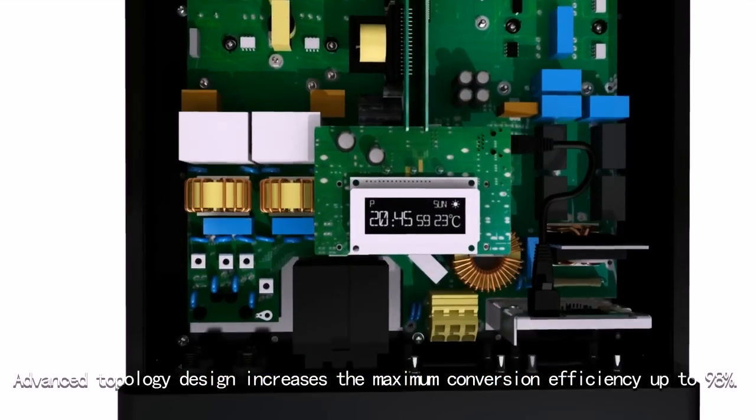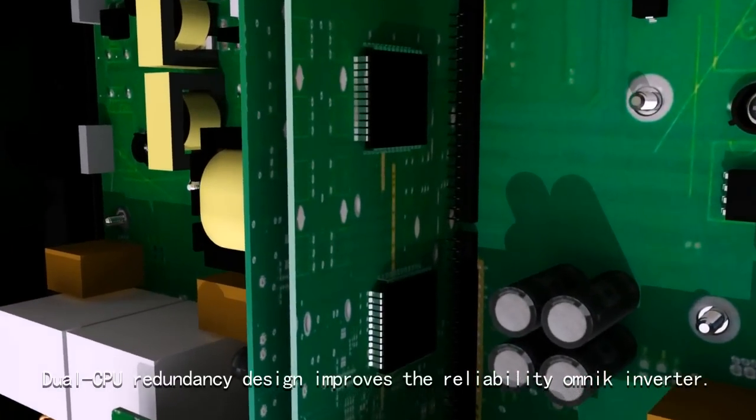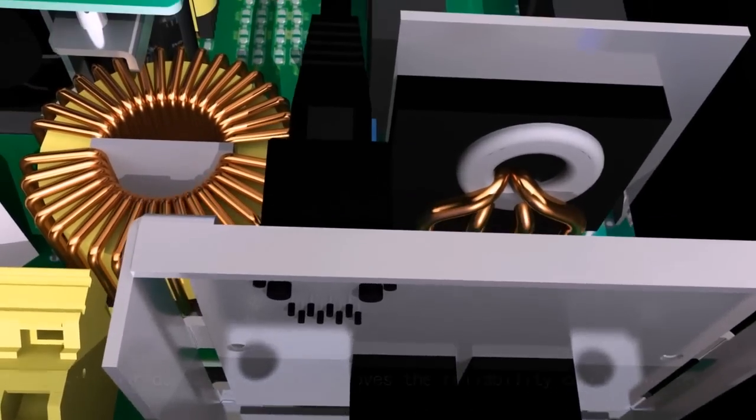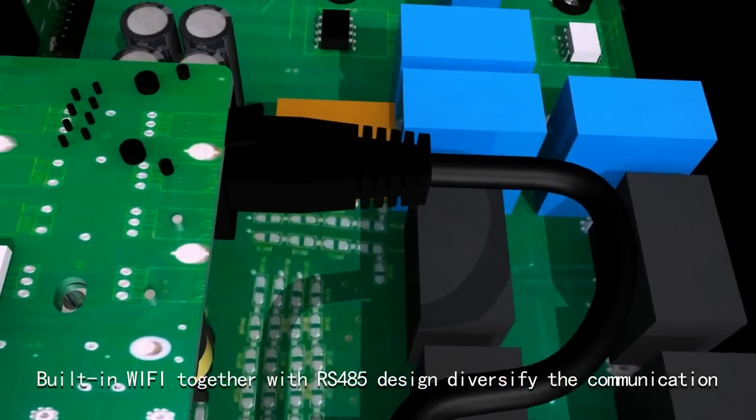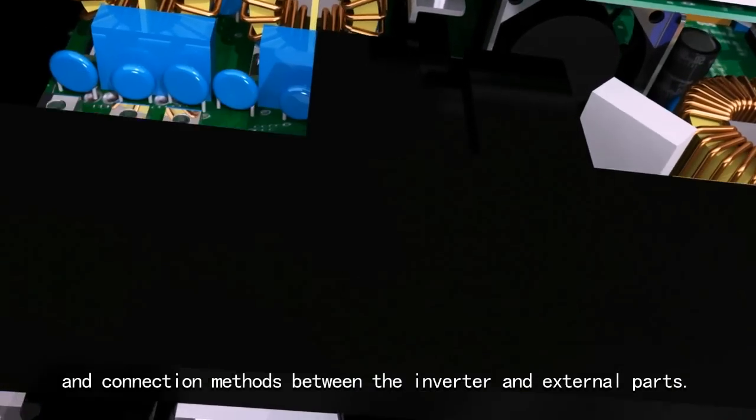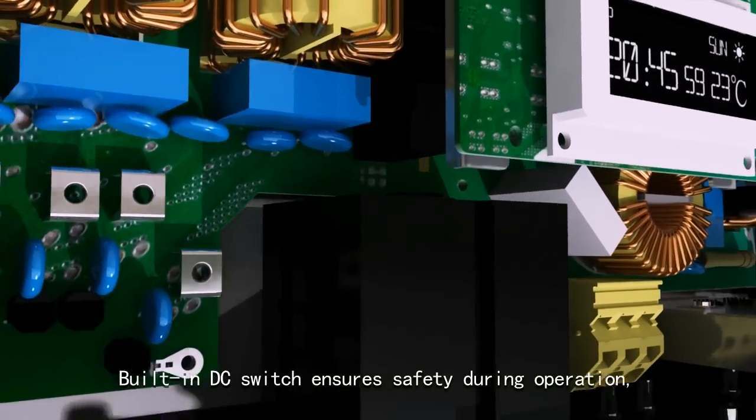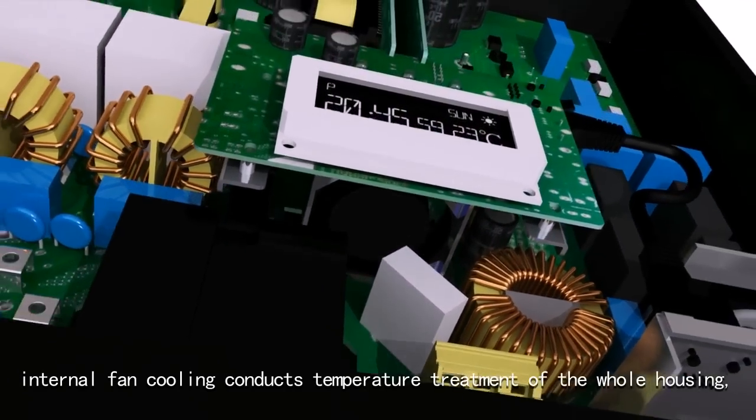Dual CPU redundancy design improves reliability. Omnic inverter built-in DC switch ensures safety during operation and offers convenience for maintenance. Internal fan cooling conducts temperature treatment of the whole housing, prolonging the life cycle of the Omnic inverter and actualizing full load output in extreme temperature.